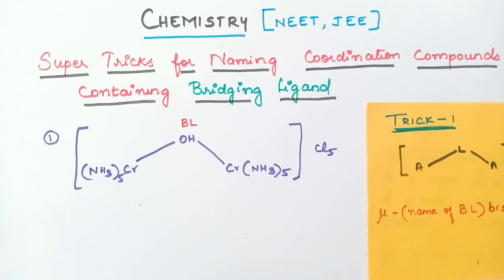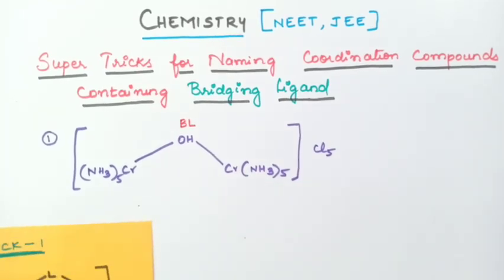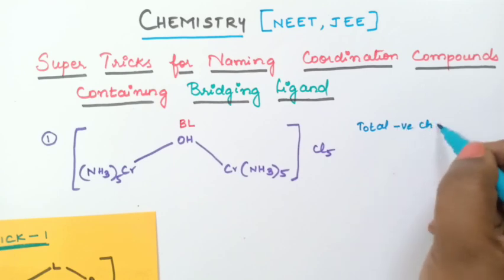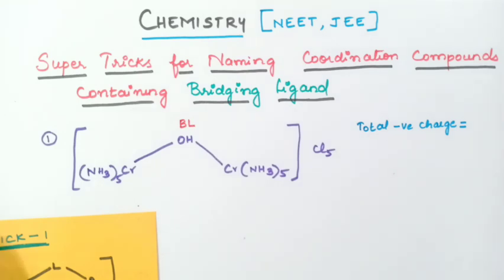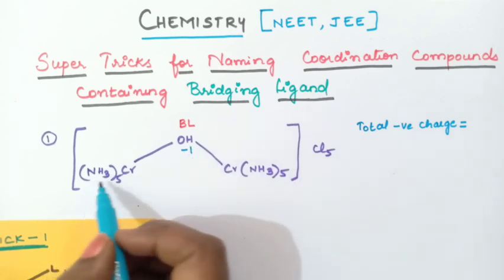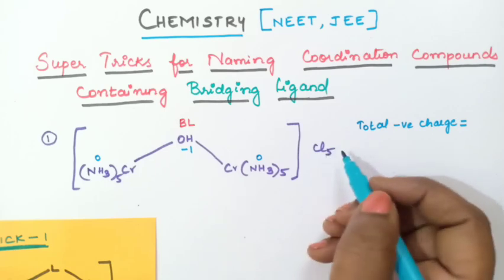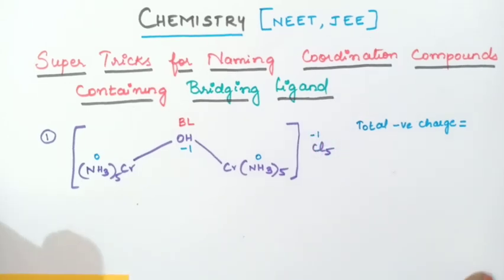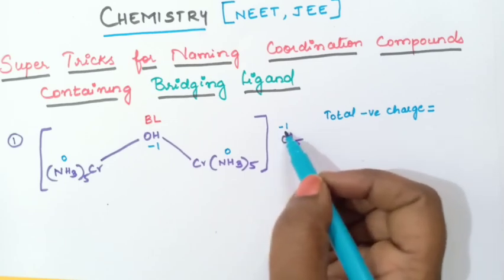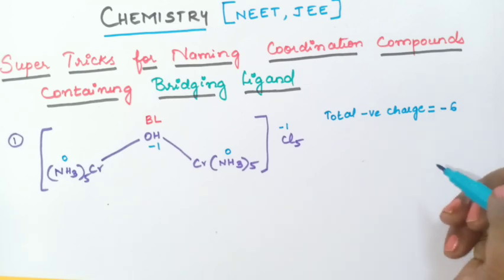The first step is to find the total negative charge on this coordination compound. OH is hydroxyl group which has −1 charge. Ammonia is a neutral ligand, so its charge is 0. Chloride group has −1 charge; there are 5 chloride groups, so 5 × (−1) = −5. Adding −1 from OH gives a total negative charge of −6.